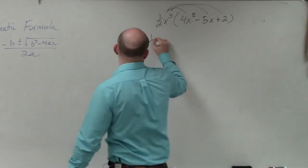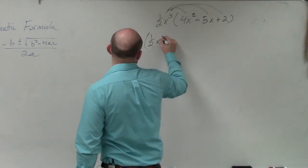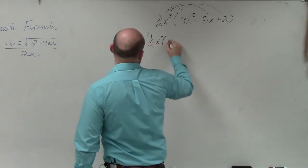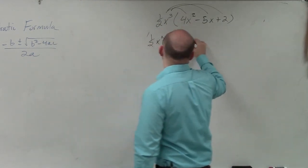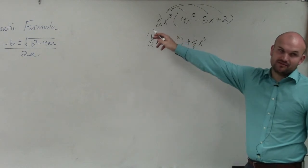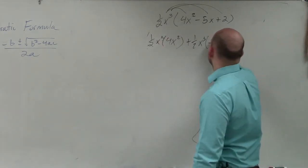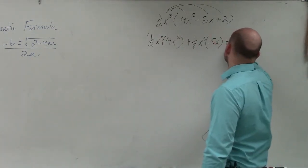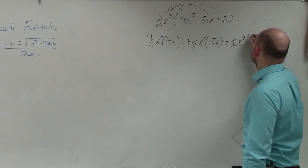So basically, what this looks like is 1/2 x³ times 4x² plus 1/2 x³, I'm adding because that's a positive 1/2, times negative 5x plus 1/2 x³ times 2.